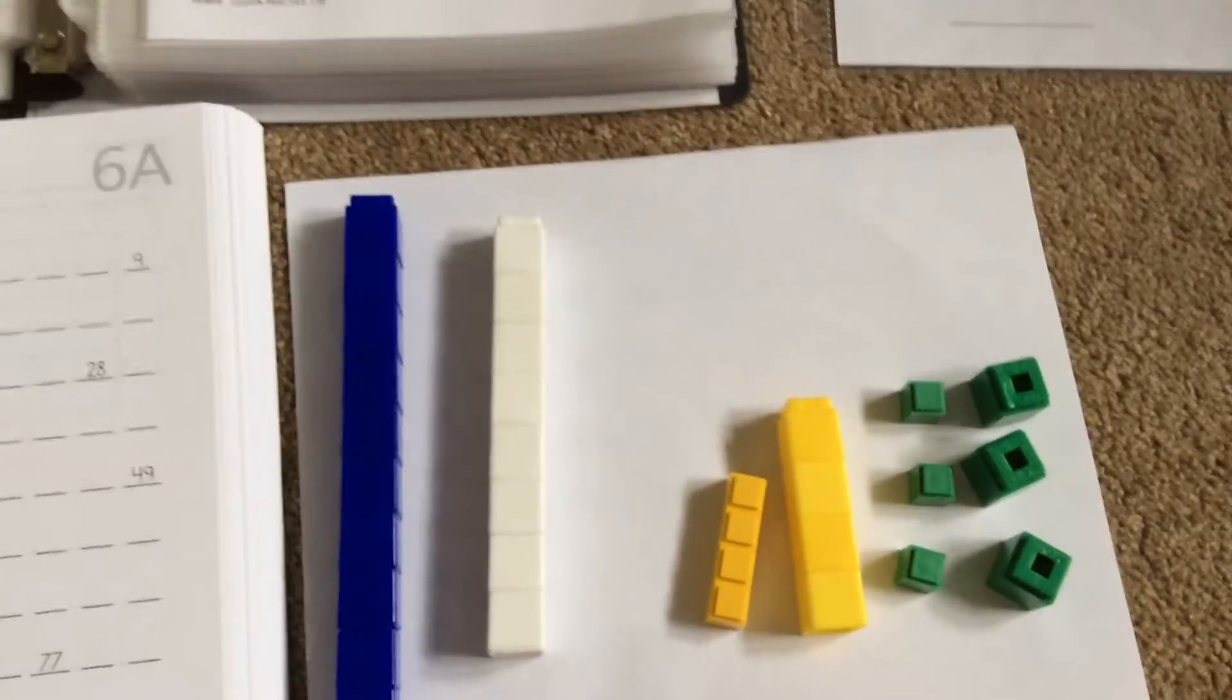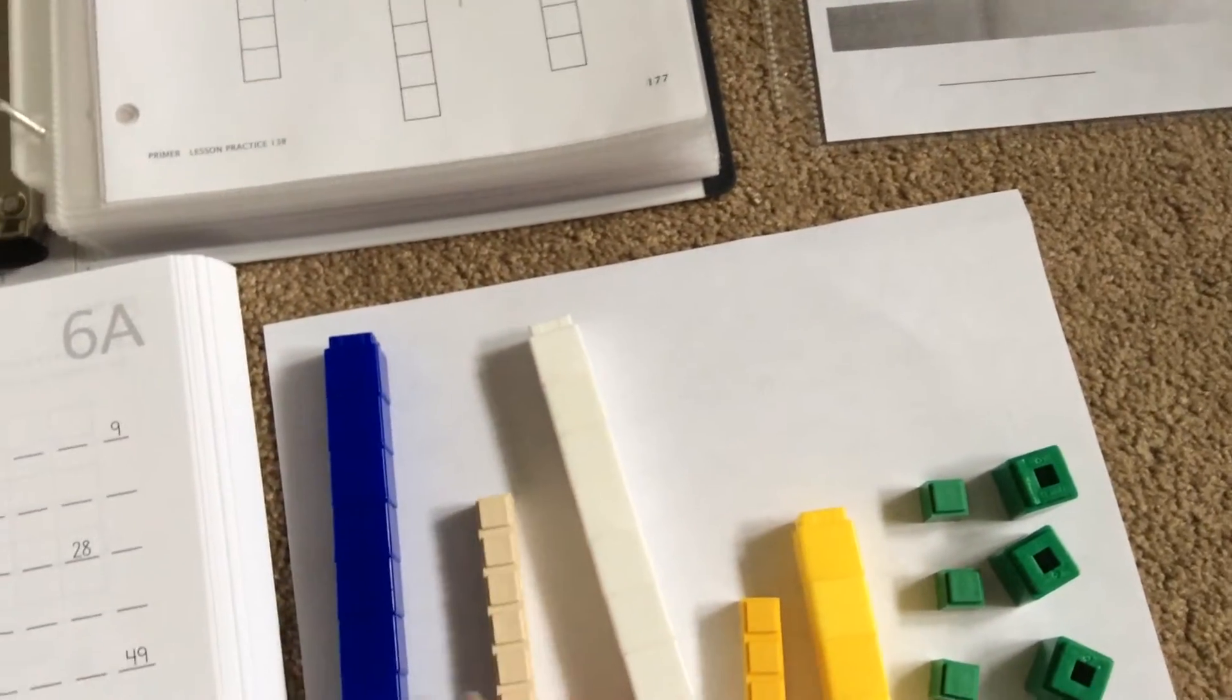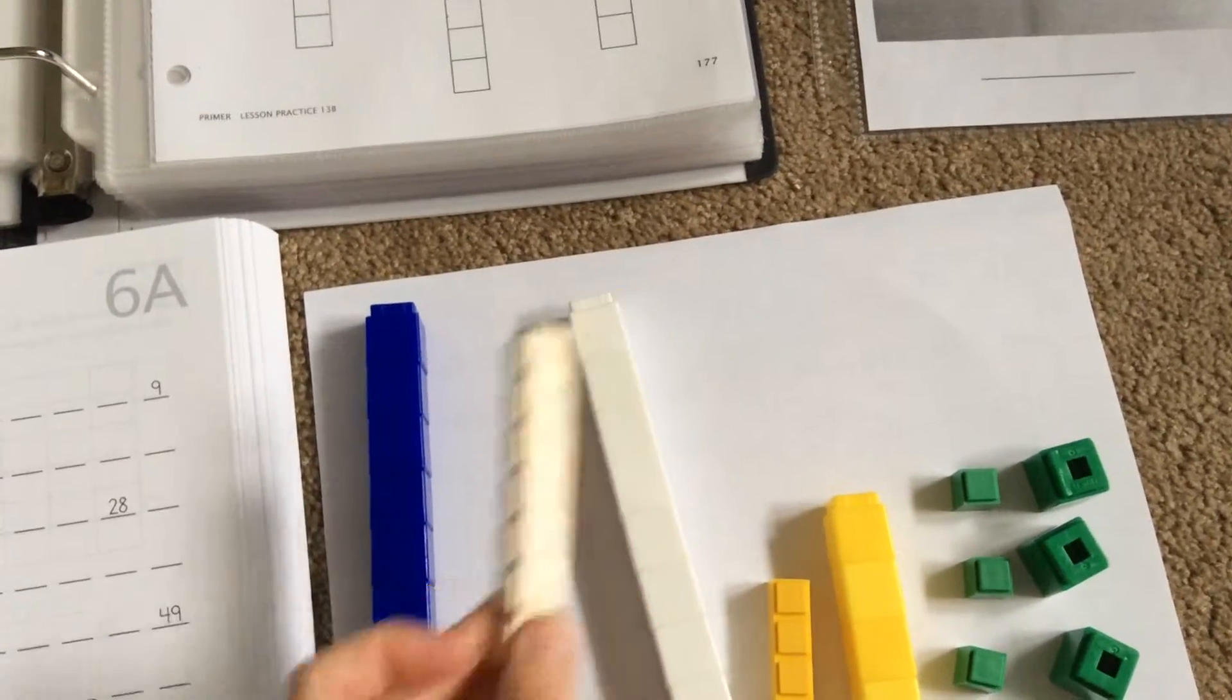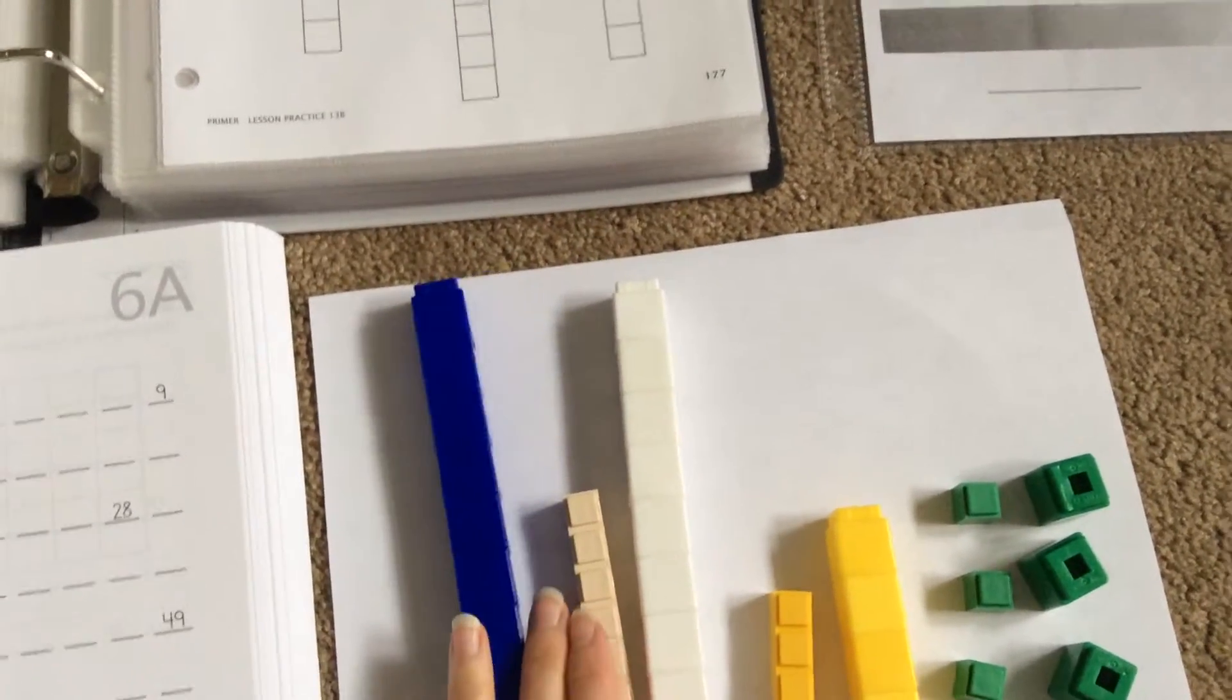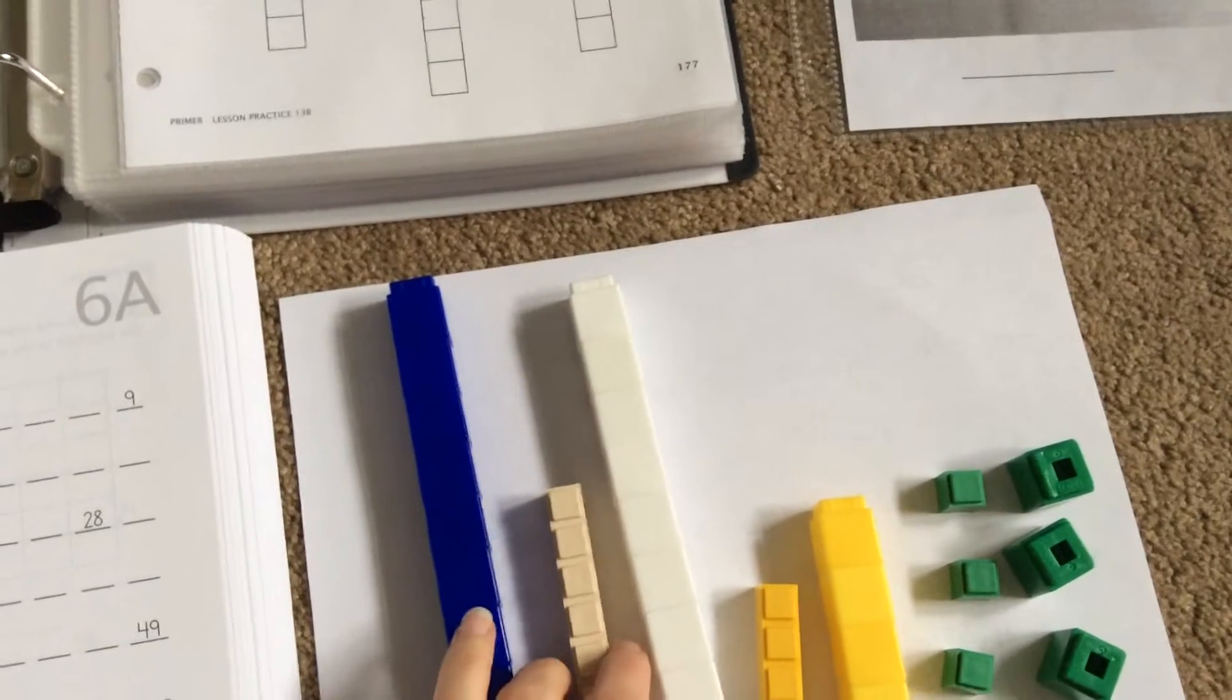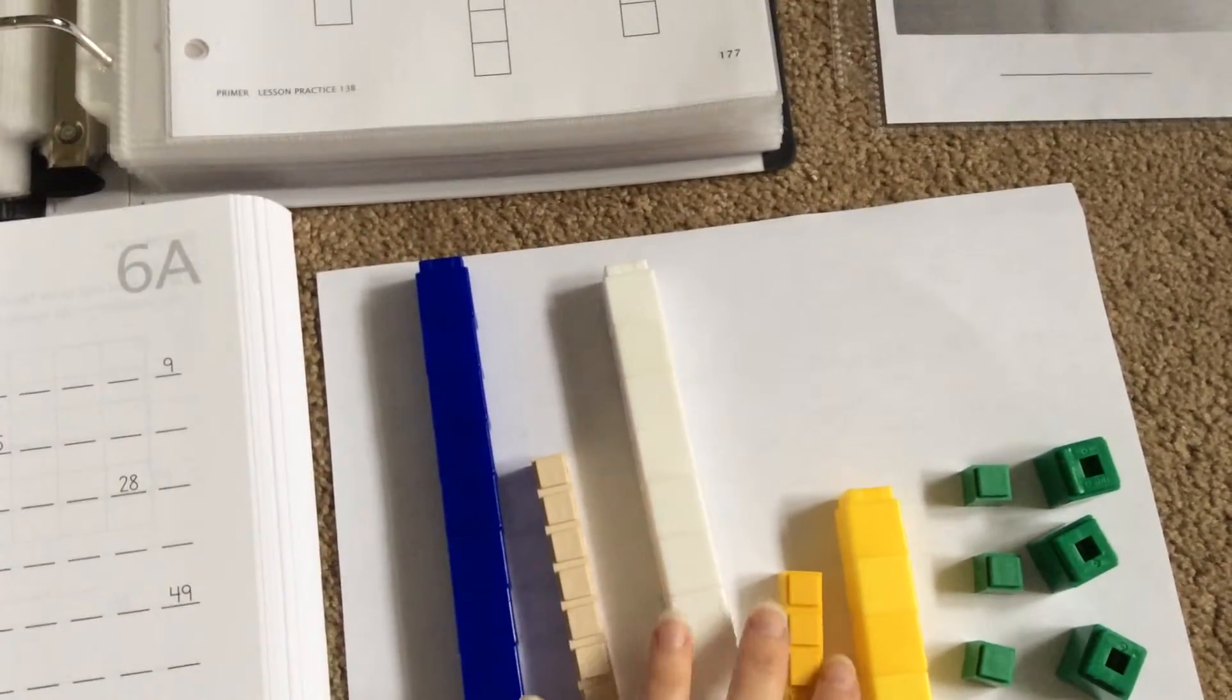So, can it be done? Yes. Is it a little bit more work? Yes. But I don't think it's so bad that you have to go out and spend lots of money for these. If you already have Unifix, and you have enough colors, and they're close enough to the Math U See blocks, I think that it should be a somewhat easy thing to do.